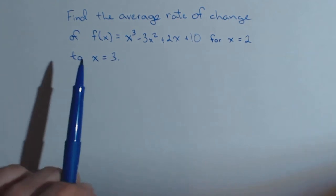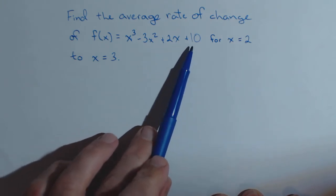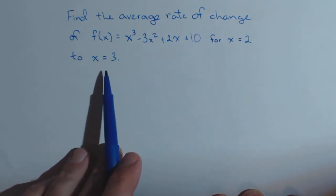We're going to find the average rate of change of our function f(x) = x³ - 3x² + 2x + 10 between x = 2 and x = 3.